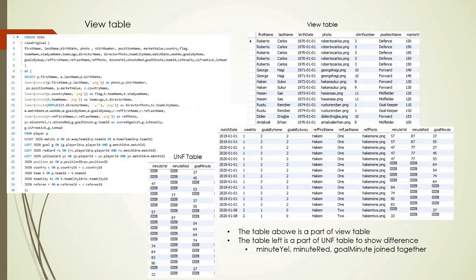After creating the 3NF tables, we create a view for comparison with the original UNF table by combining all the tables. We use a RIGHT JOIN between player and match to get all match information, then LEFT JOIN one by one for goal, red card, and yellow card tables to keep all match information even if there is no goal or card usage in that match. We then join country, team, team city, and referee tables.